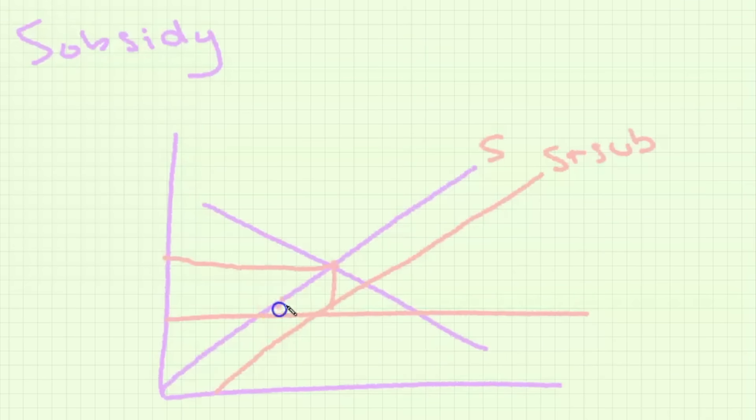For a subsidy it is a shift of the supply curve to the right because now costs of production are lower. This leads to a deadweight loss because it is inefficient and there's also a government subsidy bill, so how much the government pays for the subsidy.